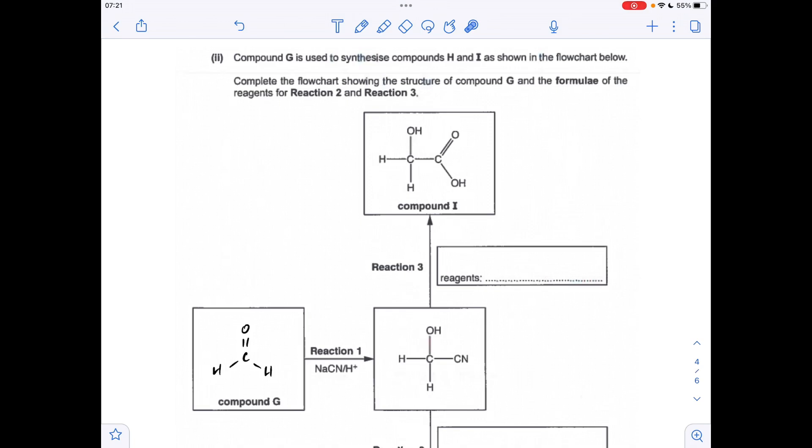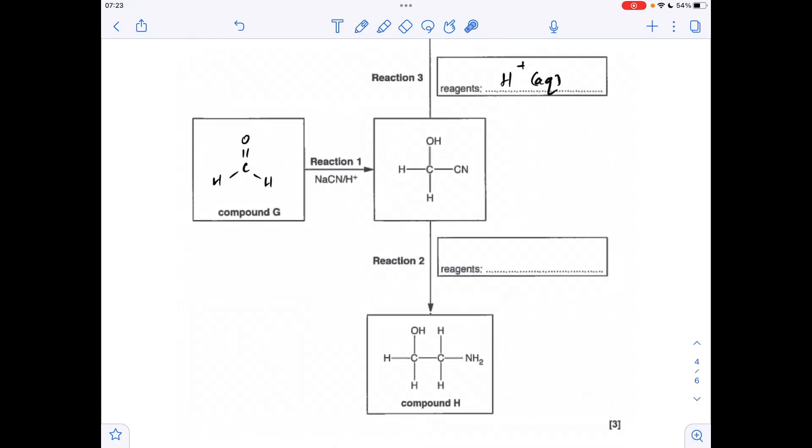We'll deal with reaction 3 next, just because it's on the screen. So how do you go from this hydroxynitrile to this hydroxycarboxylic acid? So how do you turn the CN group into a carboxylic acid group? You hydrolyse it, you react it with aqueous acid. So you could go for something like HCl aqueous. Or you could just be generic and put H+ aqueous. And finally, reaction 2. So the nitrile group has been turned into a CH2NH2 group. How do we do that? We react it with hydrogen in the presence of a nickel catalyst.